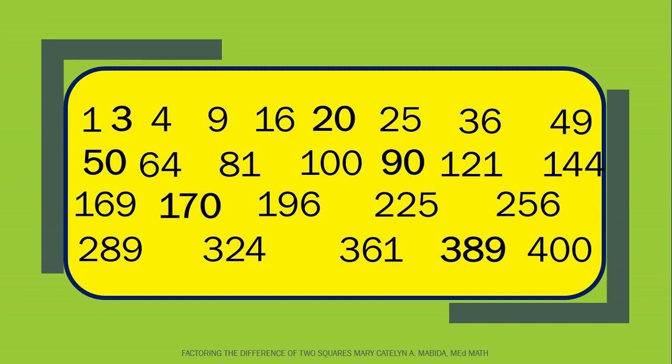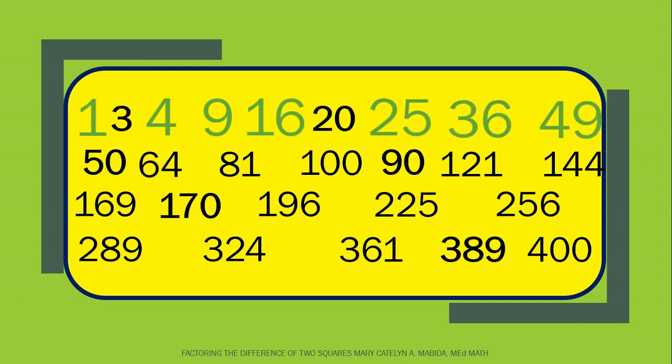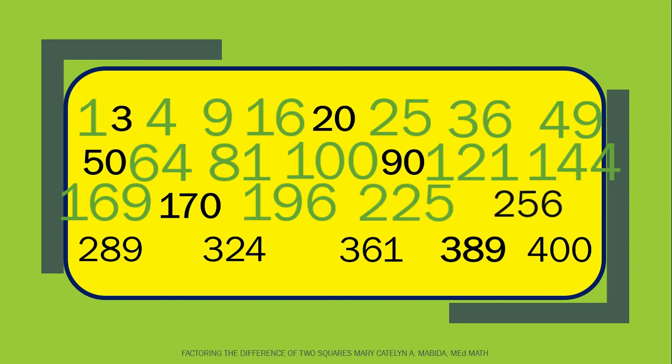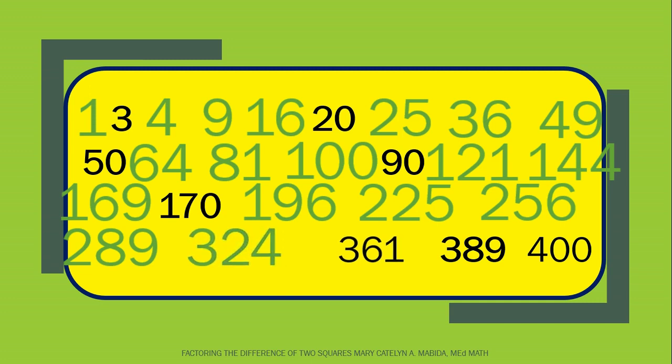Now let's see if we have the same answers. Starting from the least square number, we have 1, 4, 9, 16, 25, 36, 49, 64, 81, and 100. Fantastic! Now let's go next. Now guess what? These numbers are the first 20 perfect squares. You are gorgeous!